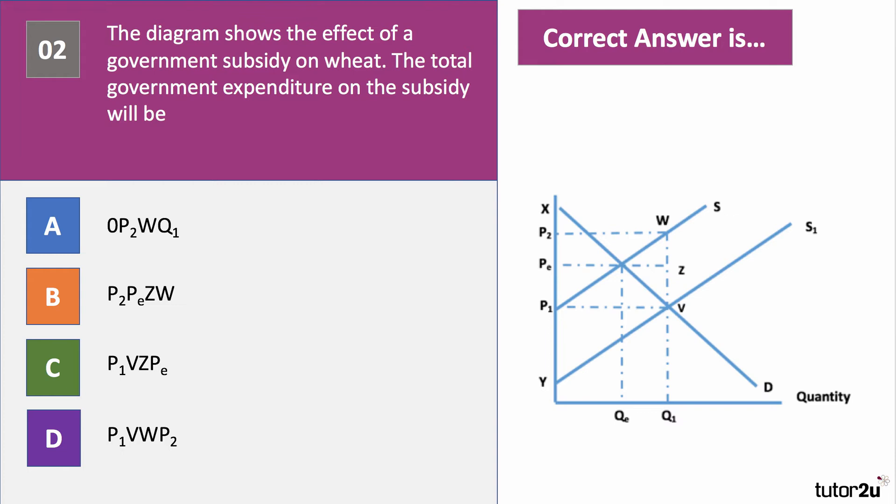The supply curve has shifted out from S to S1. The price has come down from PE to P1, so consumers have experienced a fall in price, and the quantity has gone up from QE to Q1. Total government spending is area D, shown by area P1, V, W, P2. The subsidy per unit is the vertical distance between the two supply curves multiplied by the quantity — OQ1 multiplied by VW. Answer D.